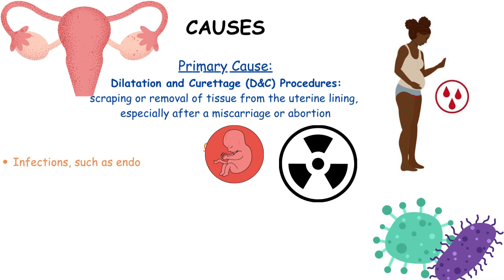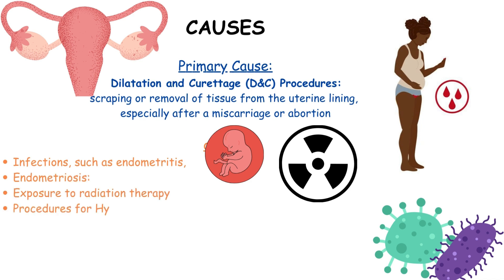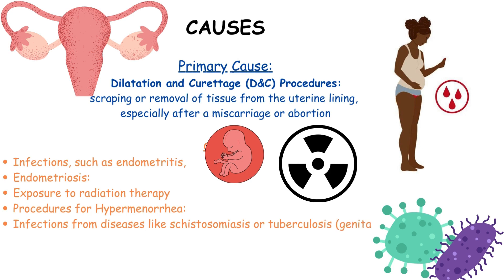Other contributing factors include infections such as endometritis and endometriosis, exposure to radiation therapy, procedures for hypermenorrhea, infections from diseases like schistosomiasis or tuberculosis, trauma to the uterine wall, and abnormal placentation.